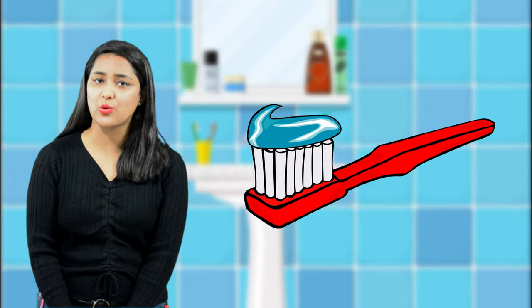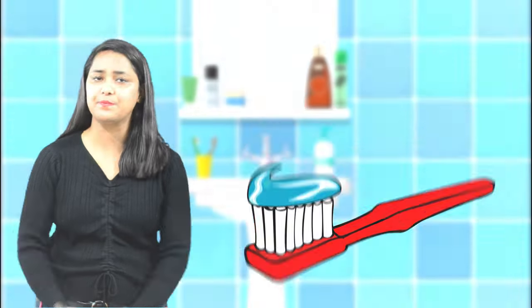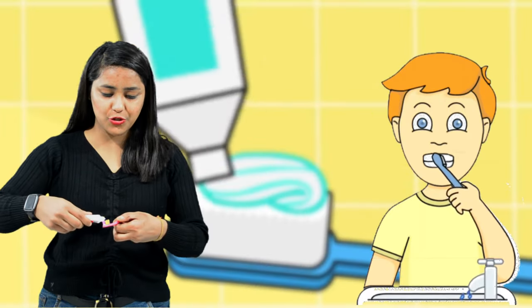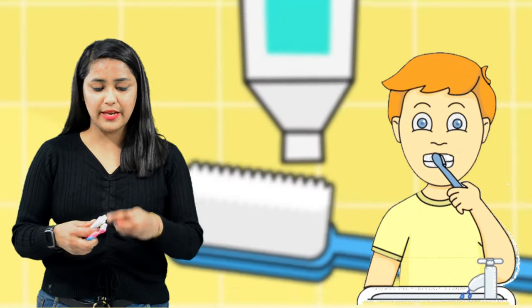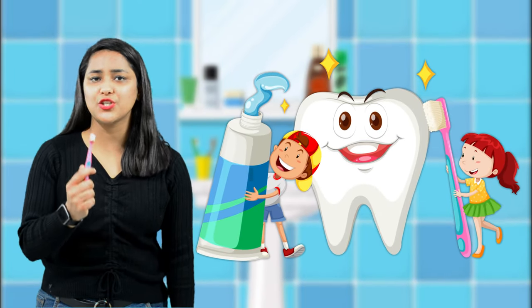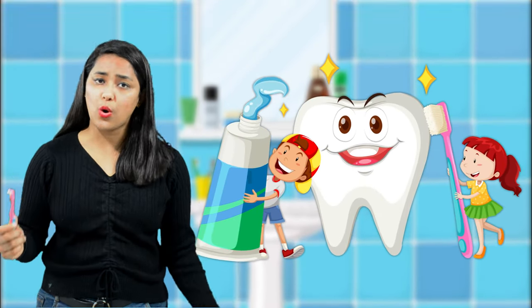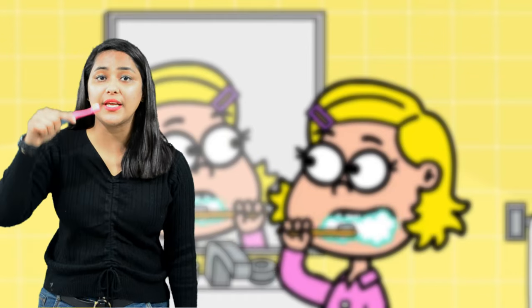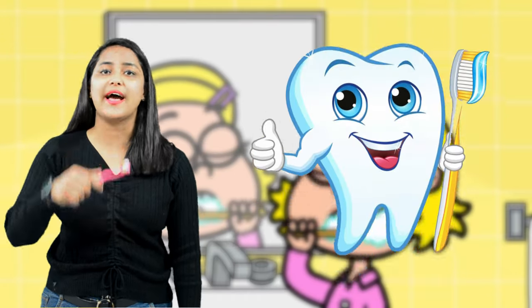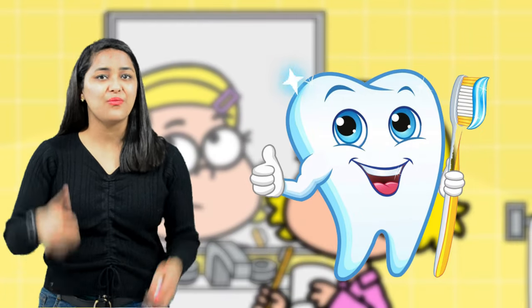Now I'm going to show you how much toothpaste is required to brush your teeth. Children, can you see? We should always use toothpaste in the shape of a pea. Can you see right here? Only this much amount of toothpaste is required. We should always brush our teeth thoroughly in all directions so that our teeth gets cleaned properly.